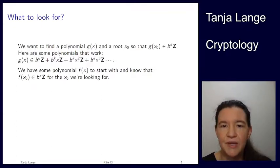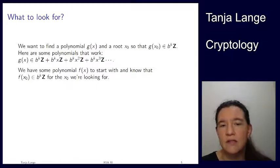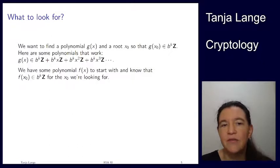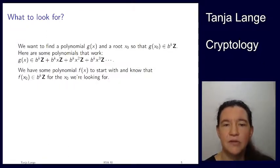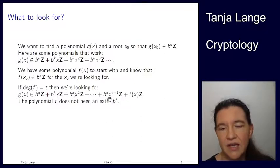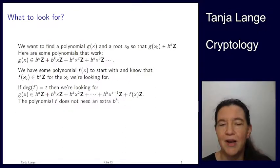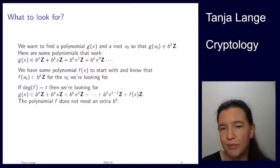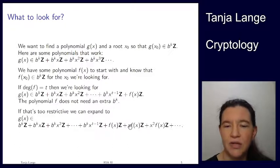Since f(x_0) ≡ 0 mod b^k, we can also use b^k, b^k·x, b^k·x², …up to degree t−1 (where f has degree t) and then the polynomial f itself and its shifts x·f, x²·f, etc. We don't need an extra b^k multiplying f since f(x_0) is already congruent to zero. Sometimes this is enough, but sometimes we need extra terms.